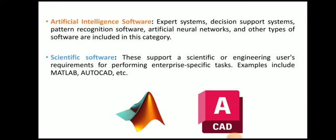Artificial intelligence software includes expert systems, decision support systems, pattern recognition software, artificial neural networks, and other types of software. Scientific software supports scientific or engineering user requirements for performing enterprise-specific tasks. Examples include MATLAB and AutoCAD.